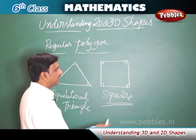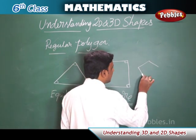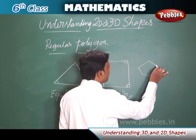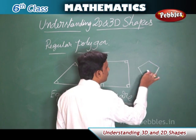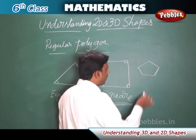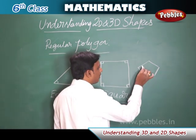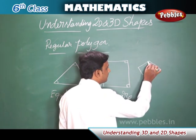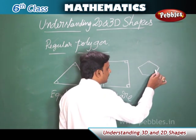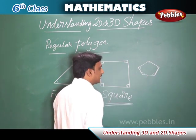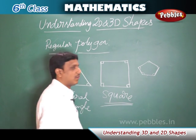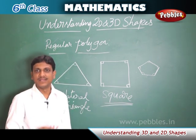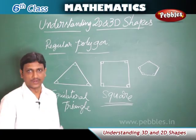For example, if a pentagon has all sides of equal length and all angles of equal value, we call it a regular pentagon. In the same way, a regular hexagon, regular heptagon, and so on are polygons where all sides and angles are equal.